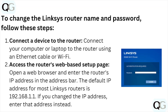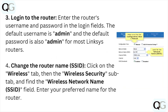The default IP address for most Linksys routers is 192.168.1.1. If you have changed the IP address, enter that address instead. Step three: log in to the router. Enter the router's username and password in the login fields.